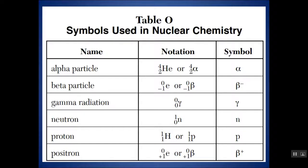You have a table called Table O, which you will always have with you. An alpha particle looks like a helium-4 nucleus — it has a top number of 4 and a bottom number of 2. Here is a beta particle — you can write it with an E or a Greek symbol beta. This is gamma radiation. Neutrons and protons are also written in isotopic notation where mass is on top and charge is on the bottom.